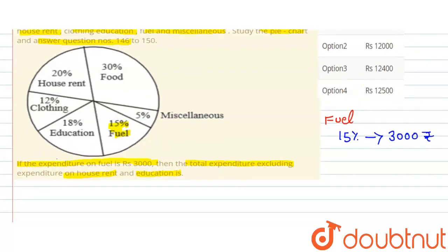Now, if we need total expenditure, then total expenditure will be 100%. So, 3000 upon 15 into 100. Now 15 goes into 3000 two hundred times. So that is equal to 20,000. This is our total expenditure.